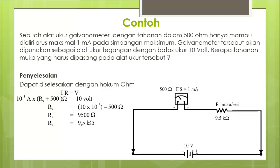Jika digambarkan, untuk mengukur tegangan pada sumber baterai, ditambahkan R muka sebesar 9,5 kilo-ohm untuk batas ukur maksimal 10 volt. Jika batas ukur maksimalnya lebih dari 10 volt, misalkan 20 volt, maka nilai R mukanya juga akan berbeda dan harus dicari kembali.